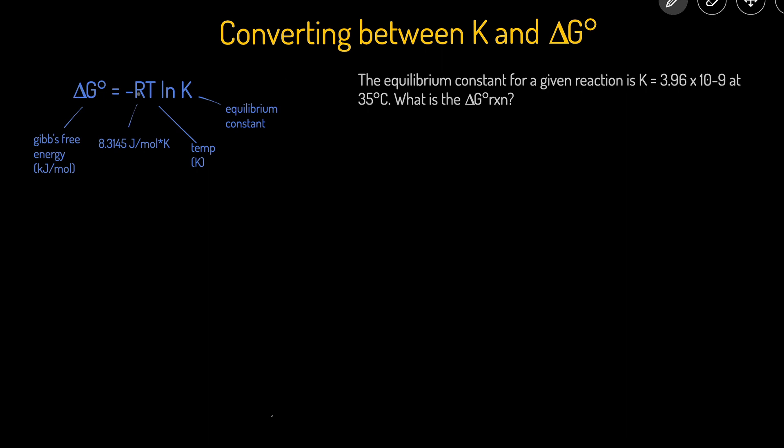We can use the equation ΔG° = -RT ln K. R is 8.3145 joules per mole times degrees Kelvin. The temperature is 35°C, so to get degrees Kelvin we add 273: K = °C + 273 = 308 K. Plugging in: ΔG° = -(8.3145)(308) ln(3.96 × 10⁻⁹).